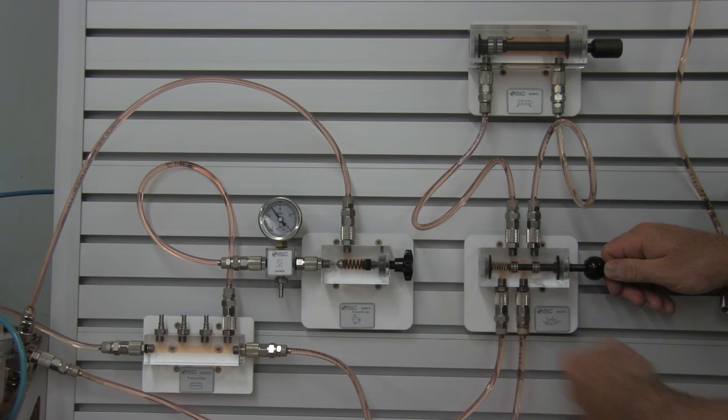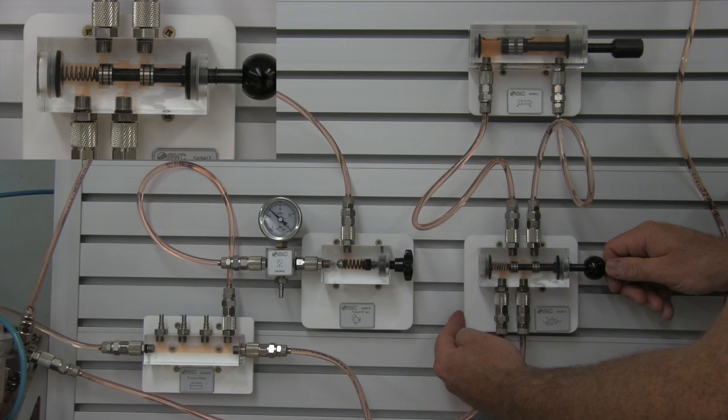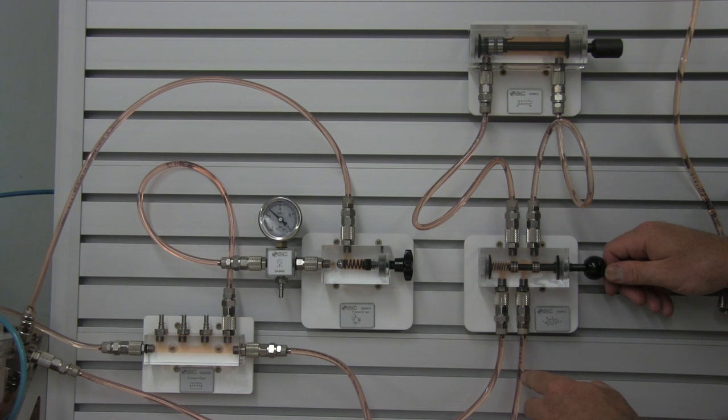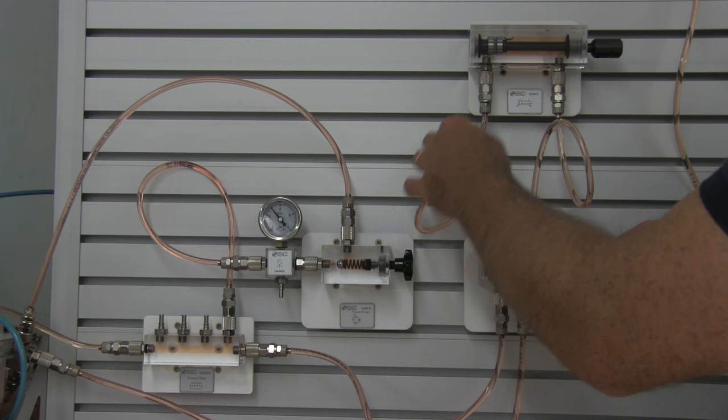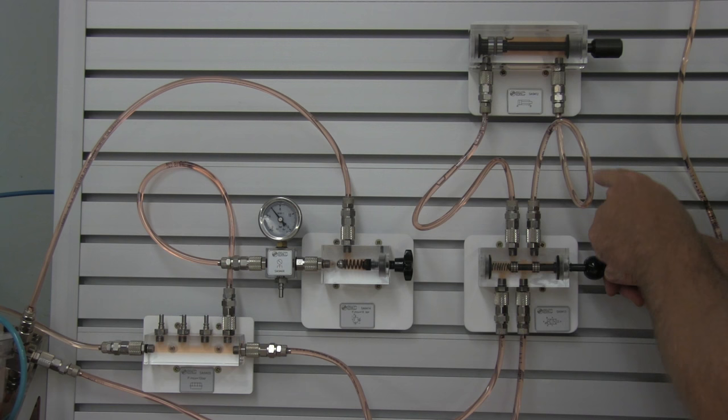You can see that the cylinder extended out and it retracts. So when I press my lever here, the pressure that's coming from my pump is being connected to my A port of this cylinder. My B is being connected back to tank, and this oil is allowed to drain out.